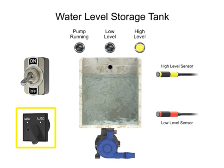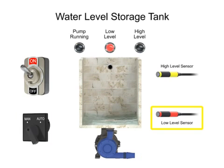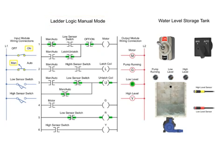In Manual mode, the program controls the water level by monitoring the low sensor switch input. In this mode, the pump motor turns off when the low sensor switch is off and turns on when the low sensor switch turns on.